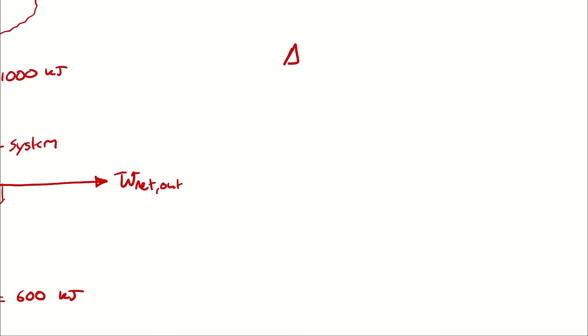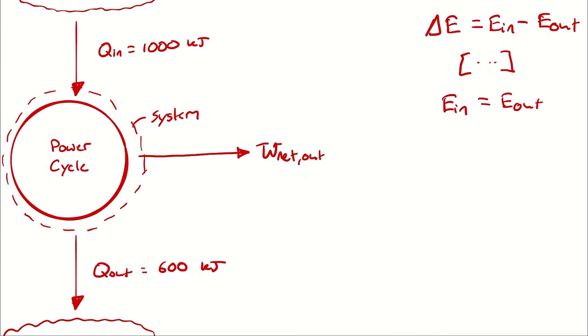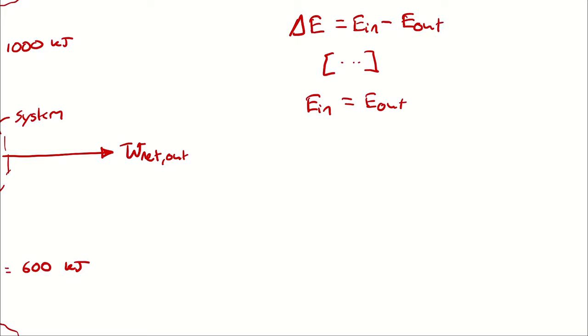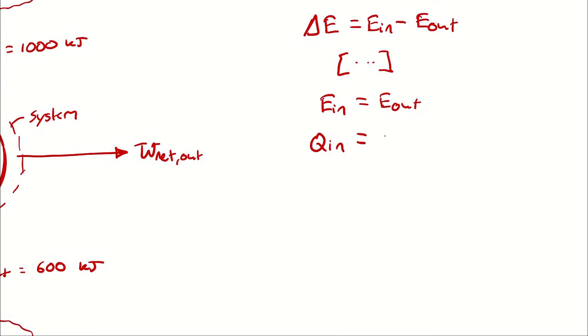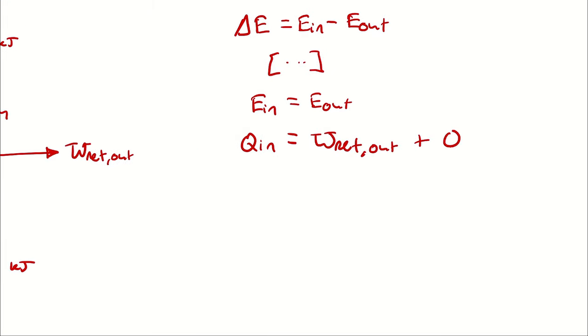With a simplification of our energy balance, I can say that E in must equal E out. For energy entering I only have Q in, and for energy exiting I have net work out, which is work out minus work in, and heat transfer out.